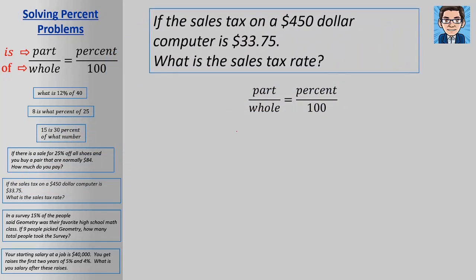All right, in this one, if the sales tax on $450 is $33.75, what's the sales tax rate? So we're going to use part over whole equals percent over 100 again. So we know the part and we know the whole. What we're looking to find is the percent. So that's where the variable goes. Now we can cross multiply, 450x equals 3,375. Divide both sides by 450 and we get x equals 7.5. So our tax rate is 7.5%.